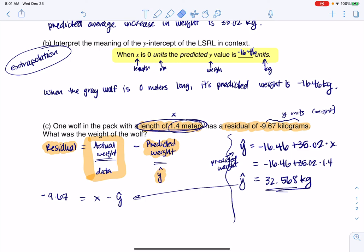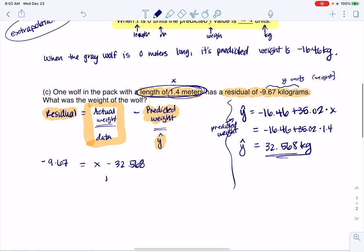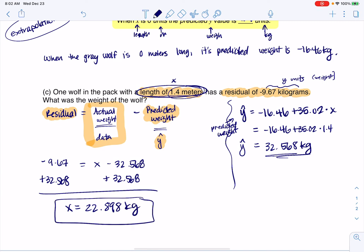Let's plug this in. Let me get the actual number, 32.568. Now it's an algebra problem. I'm going to add 32.568 to both sides of the equation. When I crunch that, I'm going to get x is equal to 22.898 kilograms. So the actual weight for this particular wolf was 22.898. I very much overestimated the weight. I thought it was 32.568, which is why the residual is negative, because the actual was less than the predicted. Thanks so much, everyone.